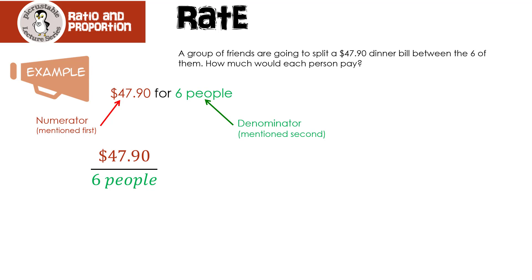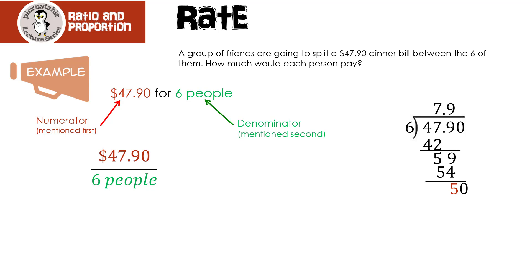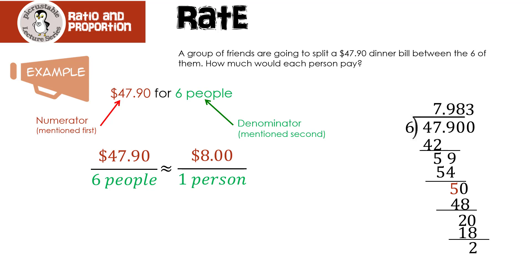The only problem is we still don't know how much each person is going to pay. In this case, we need to divide. We're going to take six — the number of friends in the group — and divide it into $47.90. Bring the decimal straight up. 7 times 6 is 42, subtract to get 5. Bring down the 9; 9 times 6 is 54, subtract to get 5. Bring down the 0; 8 times 6 is 48, remainder 2. Bring down another zero; 3 times 6 is 18. We're talking about money, so we don't need to go to three decimal places.